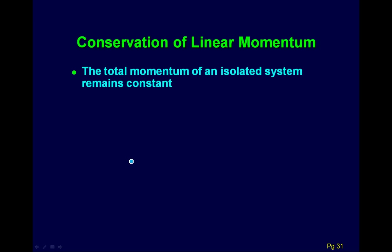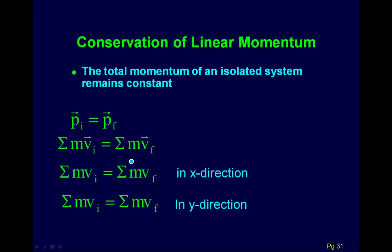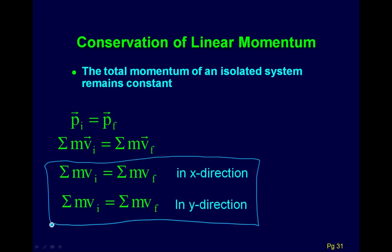To solve these problems, we want to use the fact that momentum is conserved. The way I like to do it is to say momentum initial equals momentum final — the sum of the momentum for all pieces initially equals the sum of all of them finally. This is a vector equation, so there are two equations: one in the x direction and one in the y direction.